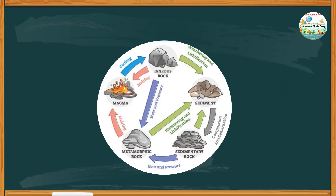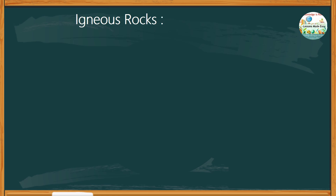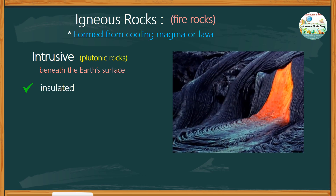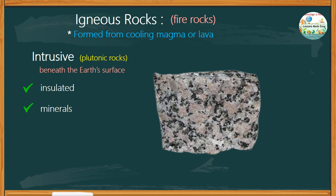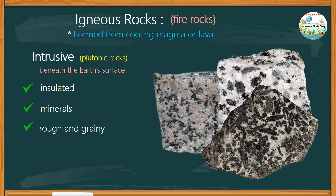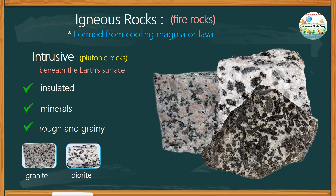Let's take a closer look at each rock type, starting with the igneous rocks, also known as the fire rocks, formed from cooling magma or lava. These fire rocks can be classified as intrusive or extrusive. Intrusive igneous rocks, also called plutonic rocks, form when magma cools and solidifies beneath the Earth's surface, where magma is insulated and cools slowly over thousands or even millions of years. Due to slow cooling, minerals have time to grow and large crystals are formed, making the rock appear rough and grainy. Examples of intrusive igneous rocks are granite, diorite, and gabbro.